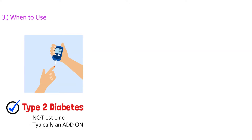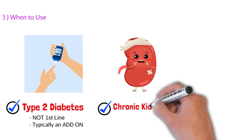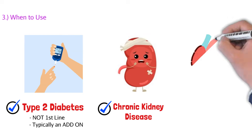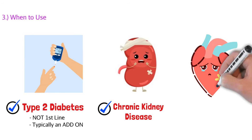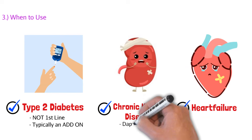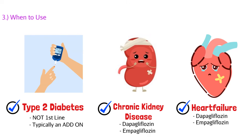There are a couple of medications in this class that can be used for other indications. One is chronic kidney disease — patients whose kidney function is poor or worsening. The other is heart failure — patients whose heart isn't pumping blood correctly. Both of these additional indications are only for specific SGLT2 inhibitors: dapagliflozin and empagliflozin. All three work for type 2 diabetes, but these two also cover chronic kidney disease and heart failure.